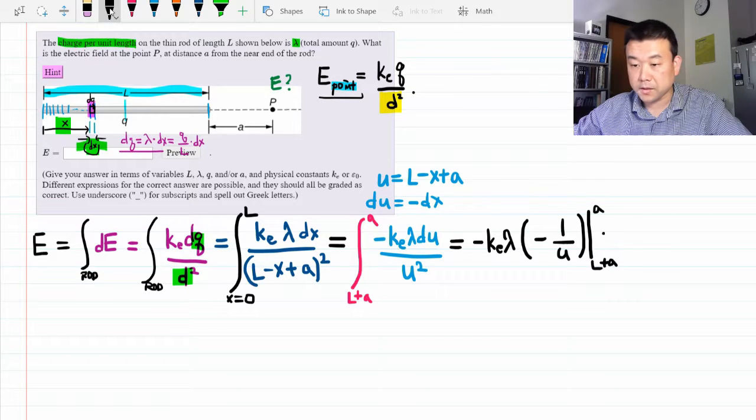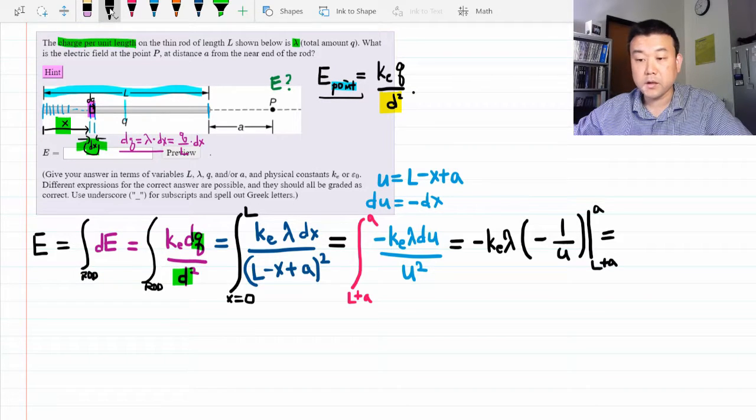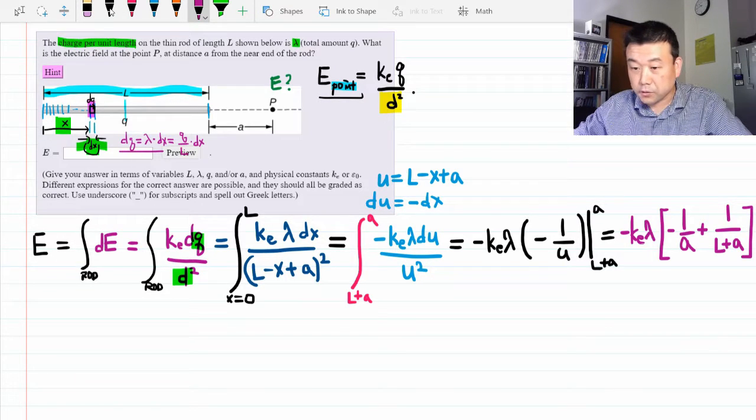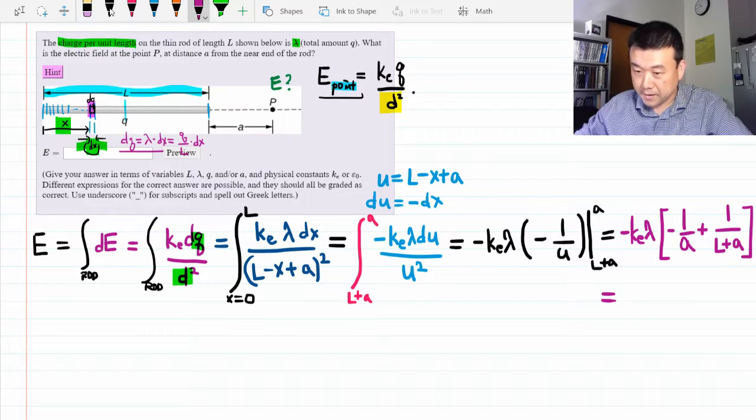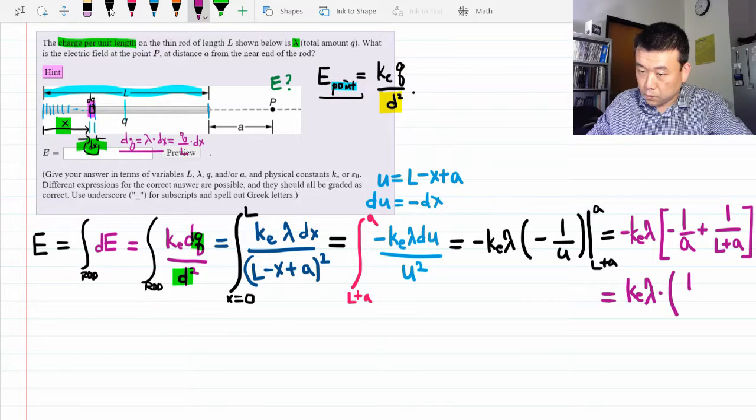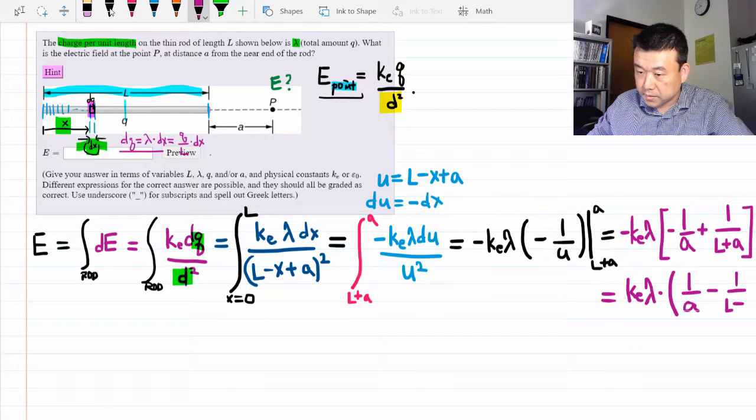Evaluate this from U equals L plus A to A. So plug in the upper limit. Subtract the one with the lower limit. And this is what we get. Let's work out all those double negatives.